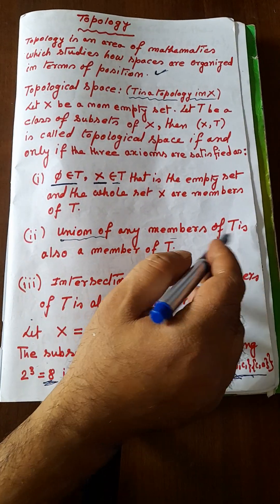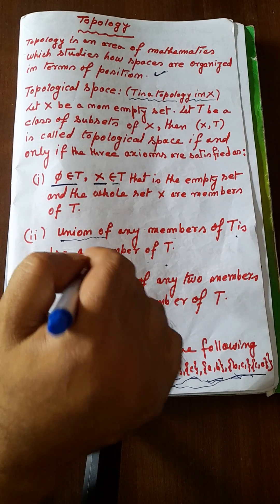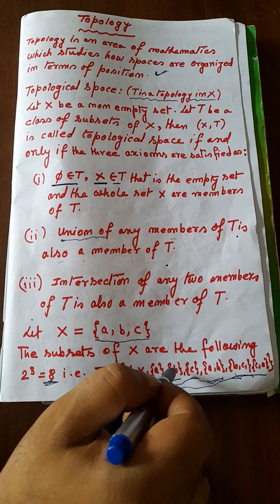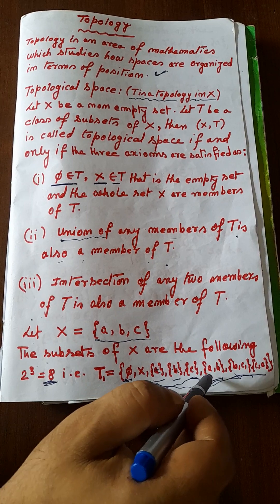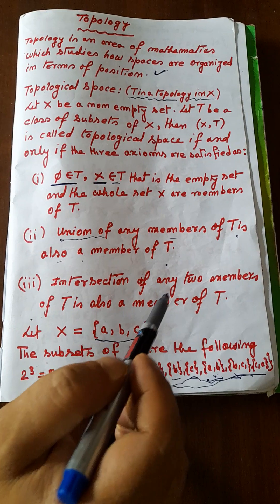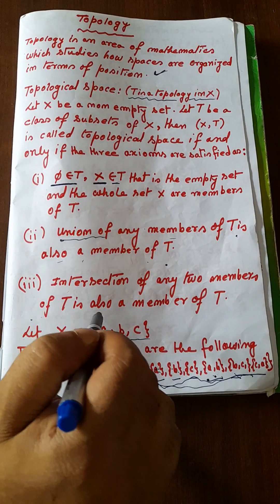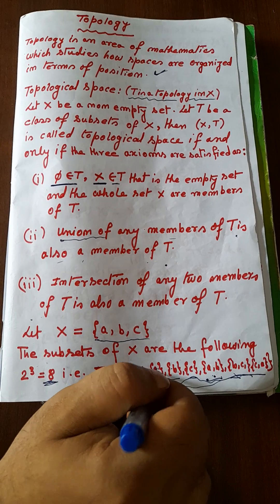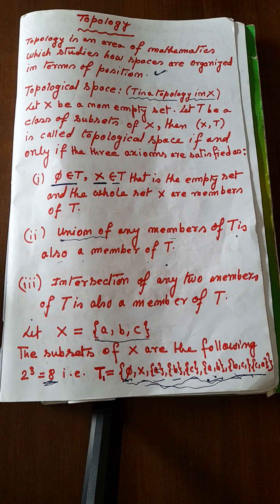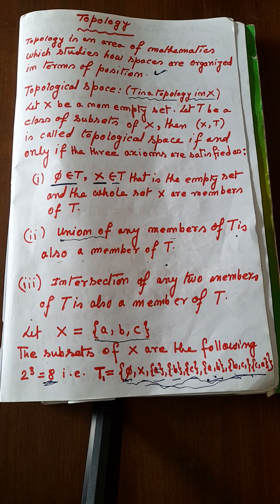The second axiom: the union of any members of T is also a member of T. For example, if A and B are in T, then A∪B also belongs to T. The third axiom: the intersection of any two subsets of T is also a member of T. For example, if we intersect A and B and get φ, then φ is also a member of T.